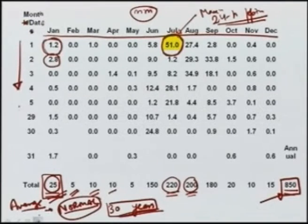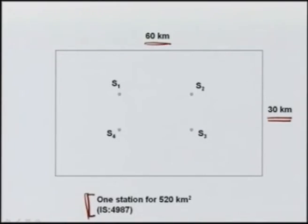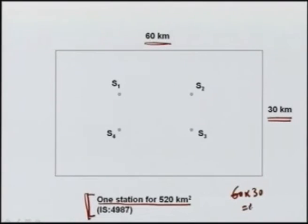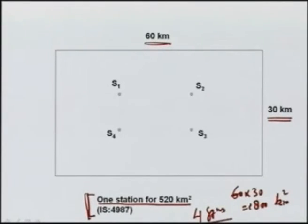Now let us take a hypothetical catchment area which is 60 kilometers by 30 kilometers in size. For sake of presentation, we can idealize it as a rectangular area, although in practice it will not be so. As per the IS code IS 4987 for plain area, one station for 520 square kilometers is the recommended requirement. Our area is 60 by 30, which is 1800 square kilometers. So we would need roughly 4 stations — S1, S2, S3, and S4. We may decide to put them at 20 kilometers spacing.